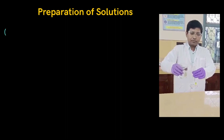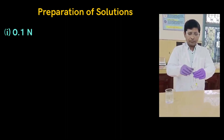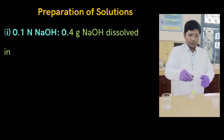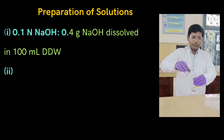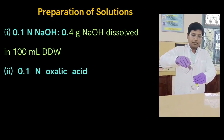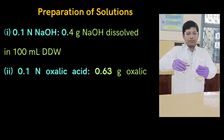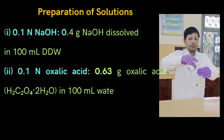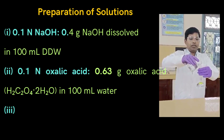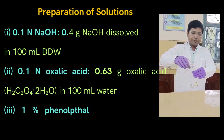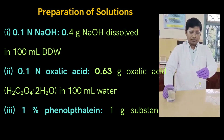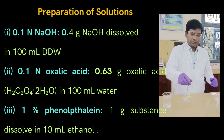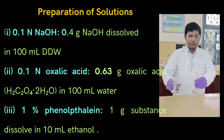Here we will see the solutions needed for acid-base titration. First, 0.1 Normal NaOH solution, where 0.4 g NaOH is dissolved in 100 ml distilled water. Second, 0.1 Normal oxalic acid solution, prepared by dissolving 0.63 g oxalic acid in 100 ml distilled water. Third, 1% phenolphthalein: 1 g substance dissolved in 10 ml ethanol.